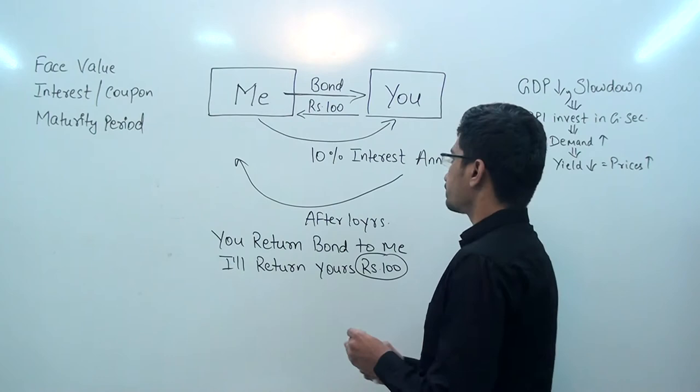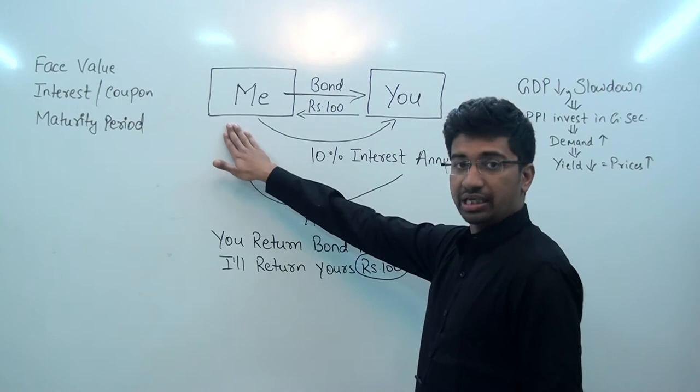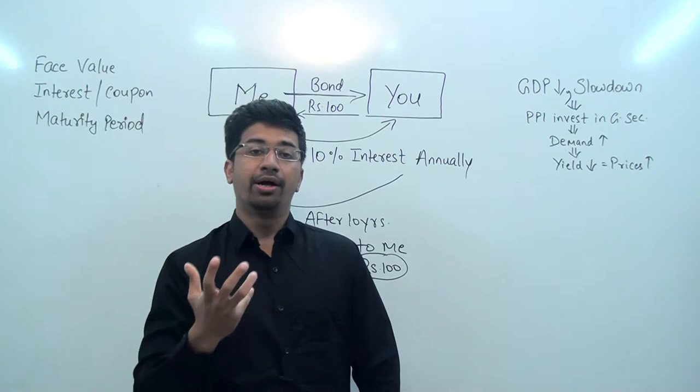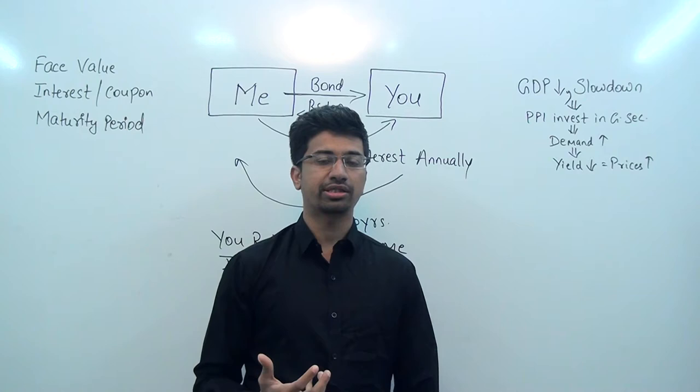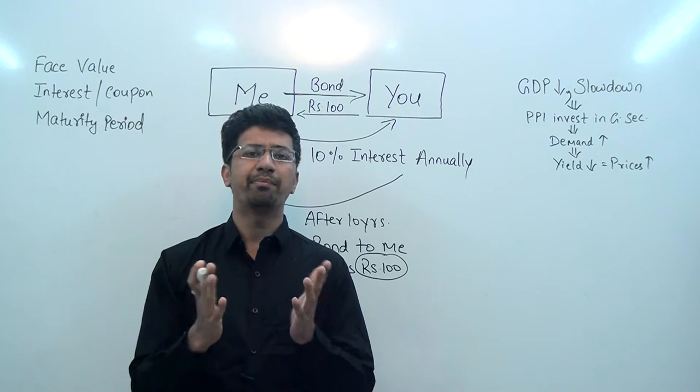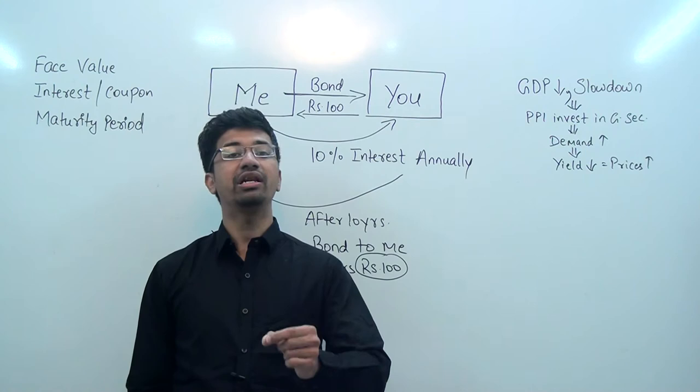Here is an example. Think of it as me and you. I am the issuer of the bond and you are the receiver of the bond. As the issuer, I am assuring you that I will repay the amount you give me at this time.